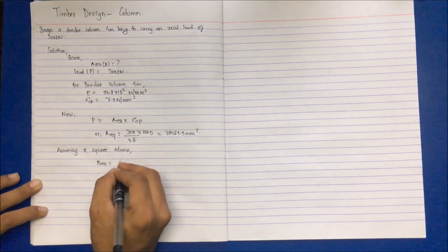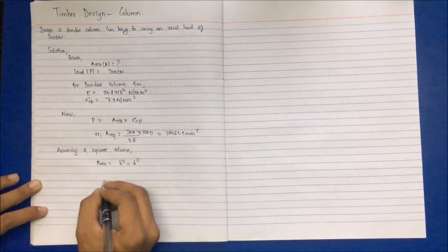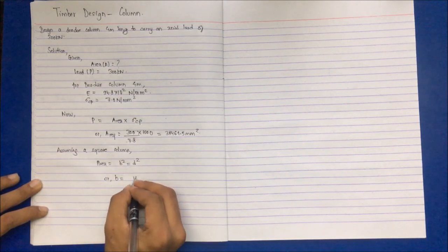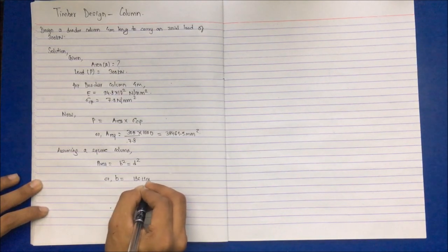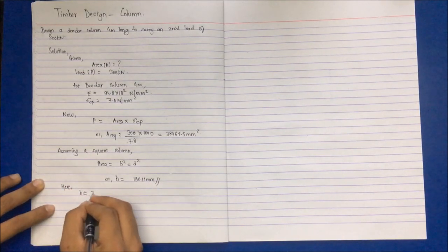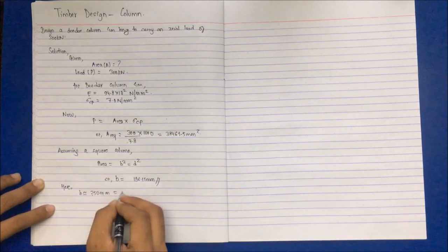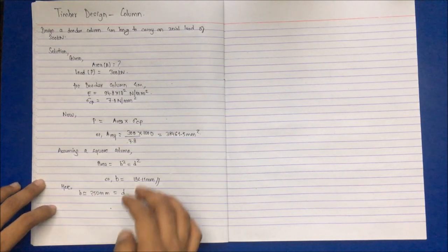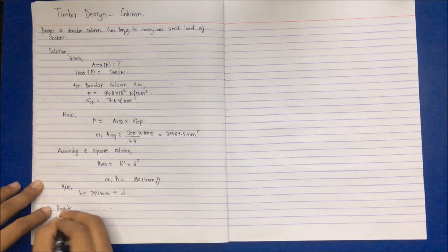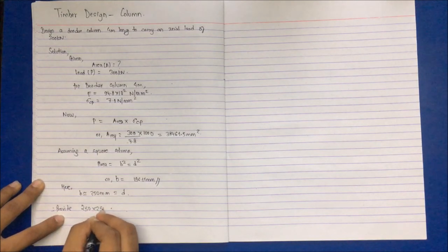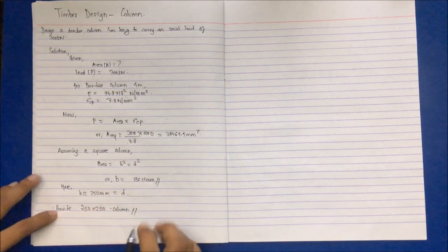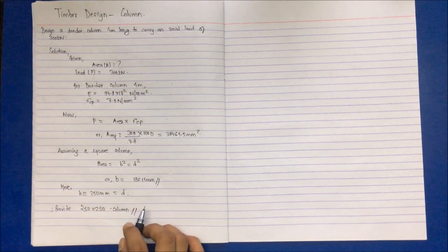Assuming a square column, that means all dimensions will be same. Area is d square, which gives us d equals 196.11 mm. Provide nearly equal to 250 mm, that will be the depth of the column. So b and d provided are 250 mm by 250 mm column. This is the general procedure.